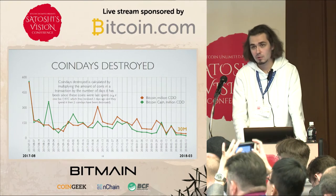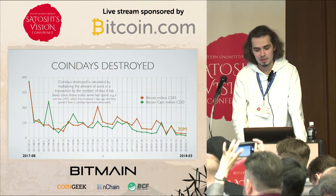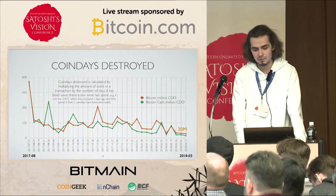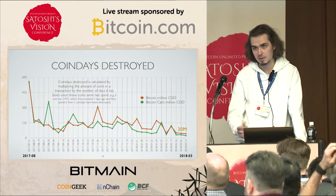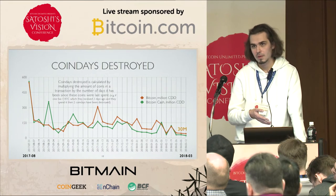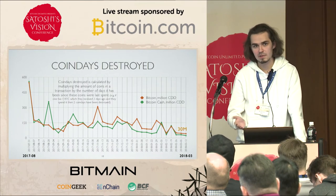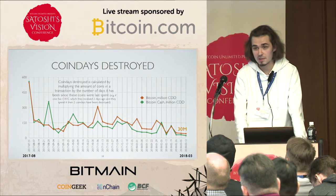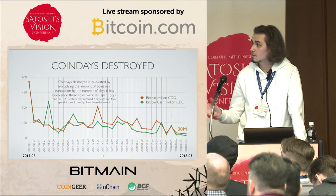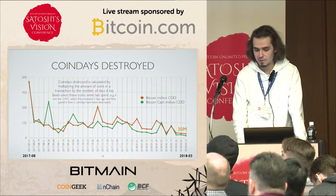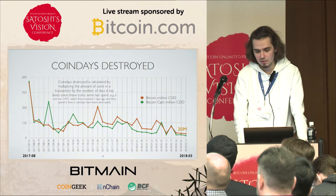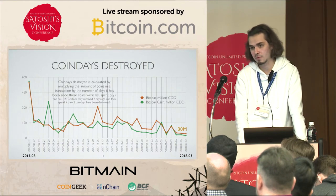The next metric is a little more complicated — it's called Coin Days Destroyed. Coin Days Destroyed is calculated by multiplying the amount of coins in a transaction by the number of days since those coins were last spent. For example, if I received two bitcoins three days ago, two multiplied by three would be six coin days destroyed if I sent that transaction. This metric is almost the same for Bitcoin and Bitcoin Cash, so if we speak about coin turnover it's the same for both coins.